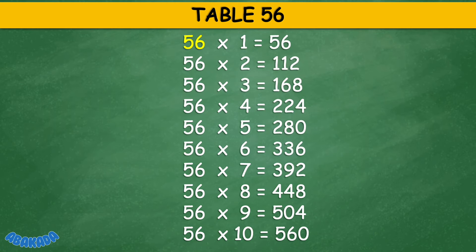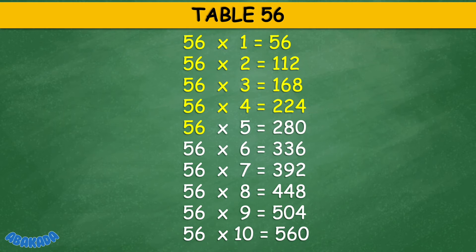Table 56: 56 times 1 equals 56, 56 times 2 equals 112, 56 times 3 equals 168, 56 times 4 equals 224, 56 times 5 equals 280, 56 times 6 equals 336, 56 times 7 equals 392.